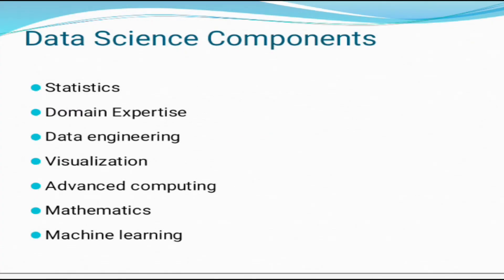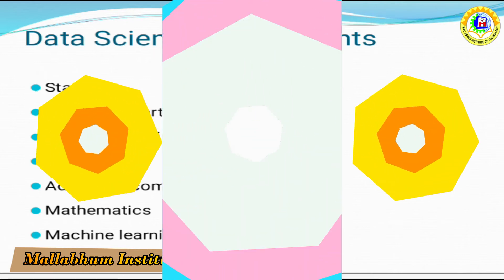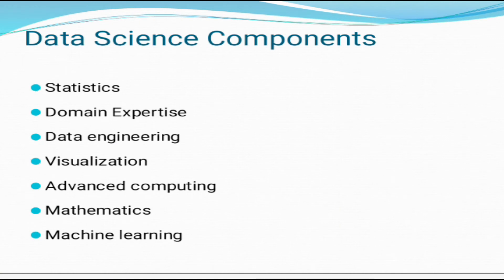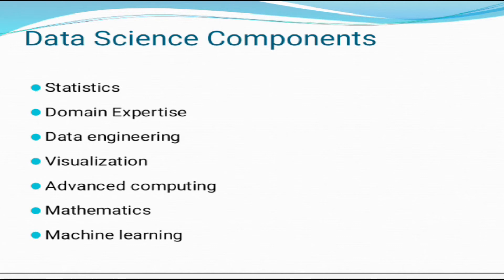Now we will discuss data science components. There are different components of data science. The first one is statistics. Statistics is one of the most important components of data science. It is a way to collect and analyze numerical data in large amounts and find meaningful insights from it. The next component is domain expertise. In data science, domain expertise binds data science together. Domain expertise means specialized knowledge or skill of a particular area, and there are various areas for which we need domain experts.